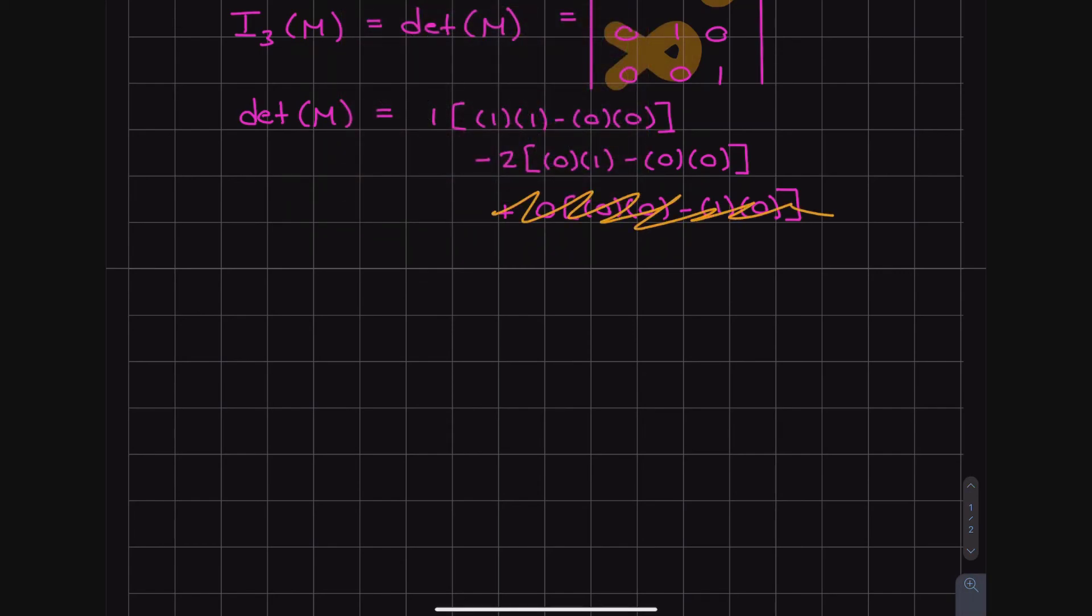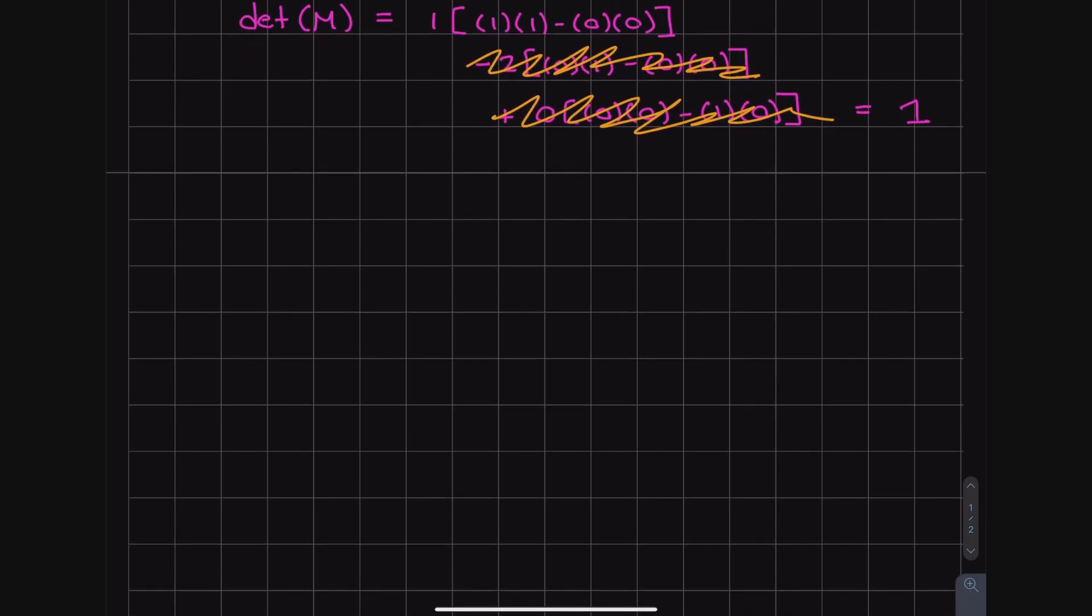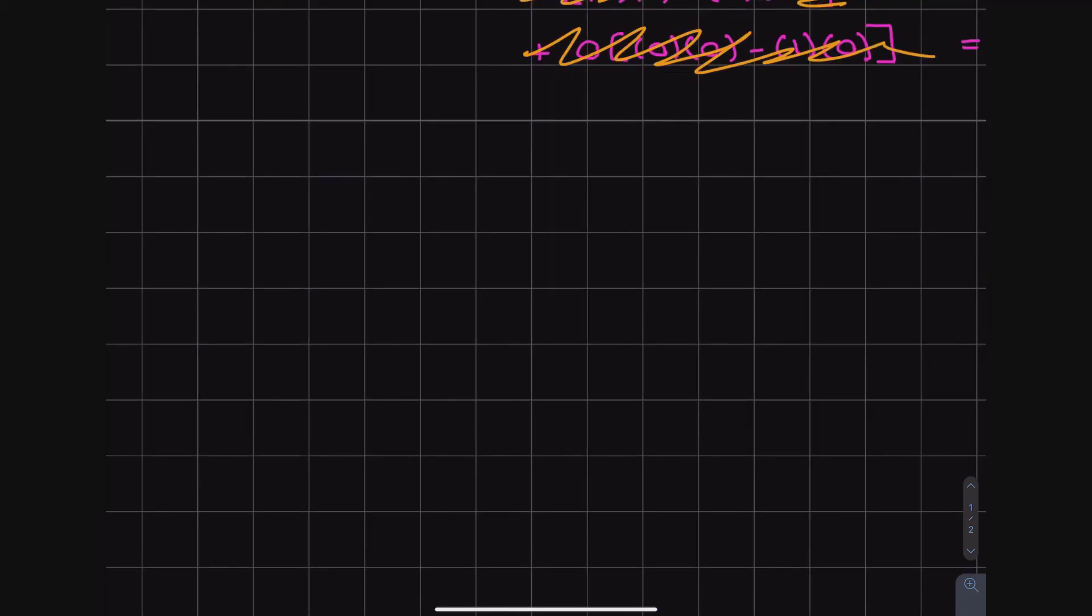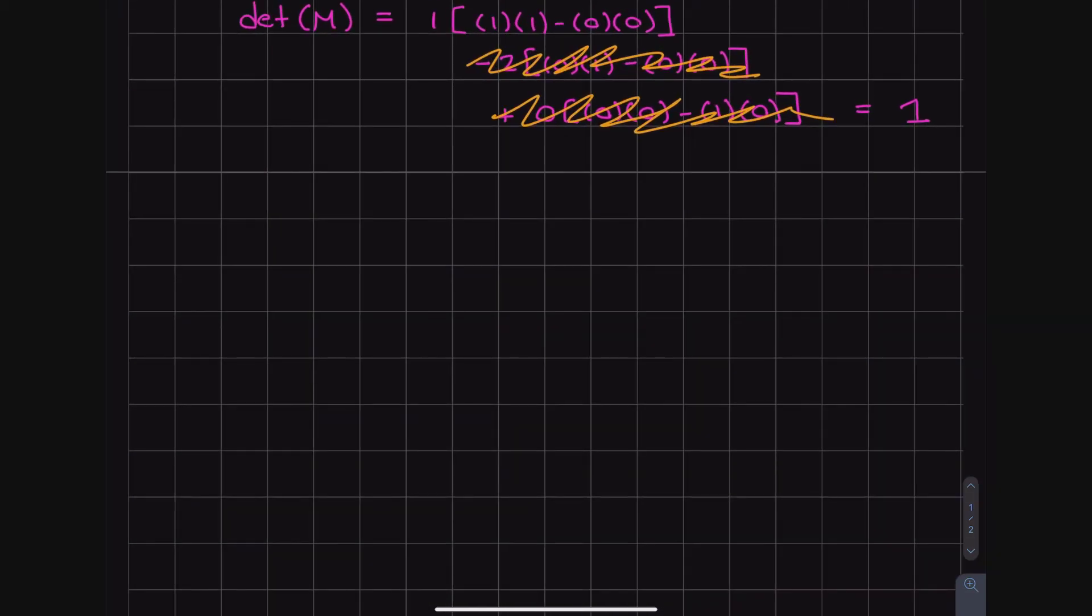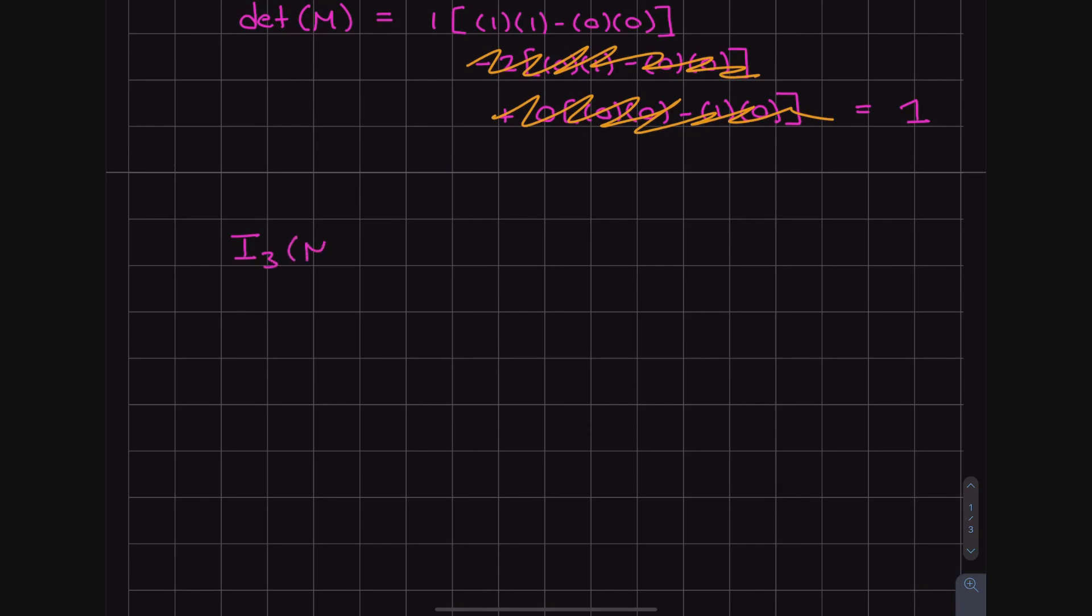So we quickly realize that 0, that's all just going to be 0. 2 multiplied by 0 minus 0, that's also going to be 0. So we realize that the determinant of M is just going to be equal to 1. And since the determinant of M is equal to 1, we can say that I3 of M, which is equal to the determinant of M, will be equal to 1.